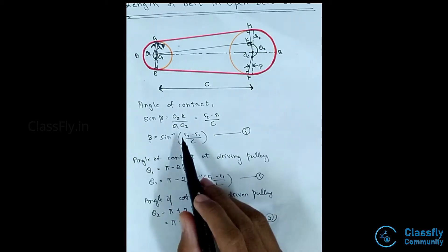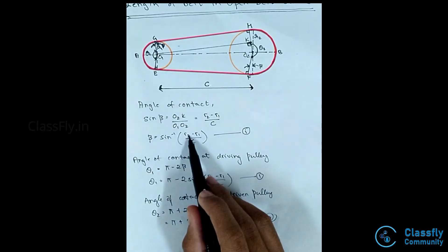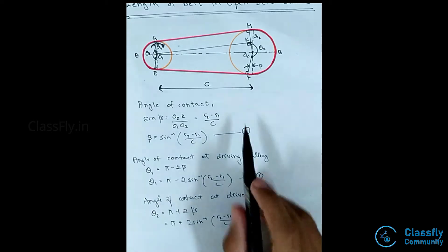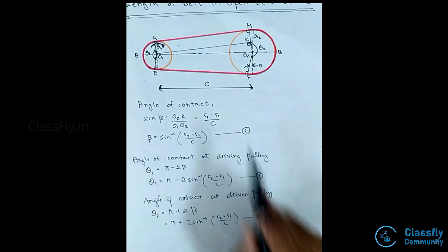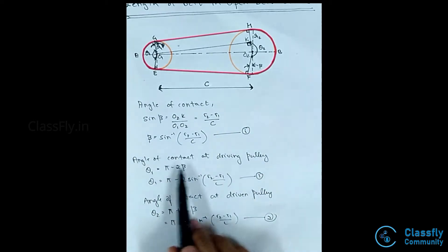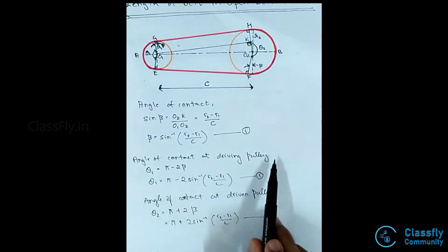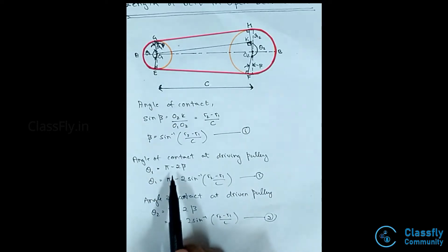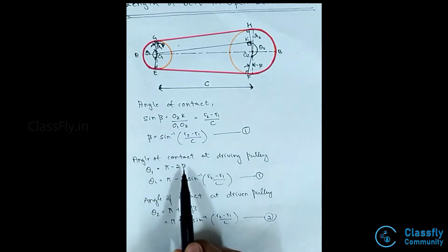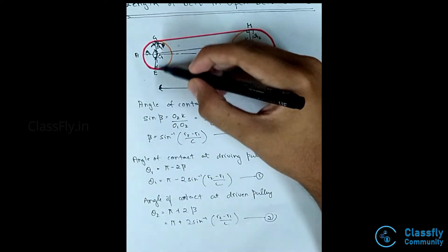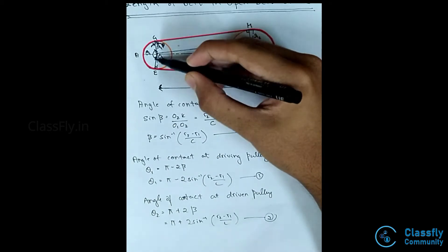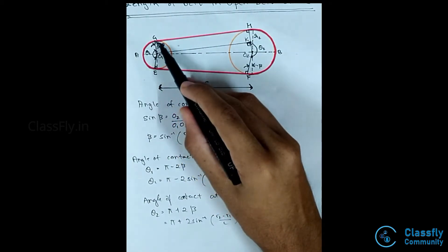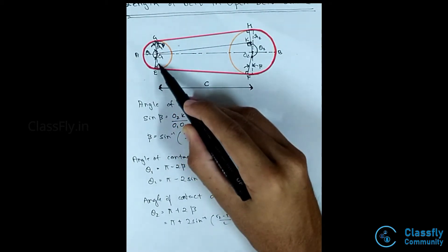Therefore beta = sine inverse of (r2 - r1) divided by C. Consider this as equation 1. The angle of contact at the driving pulley, theta 1, is given by pi minus 2 beta — that is, 180 degrees minus two times the small angle beta.